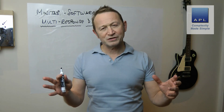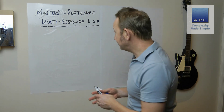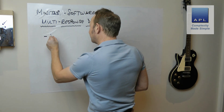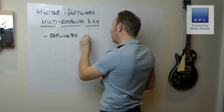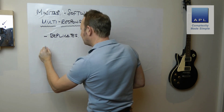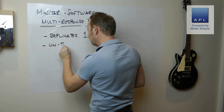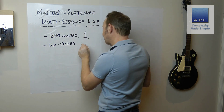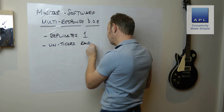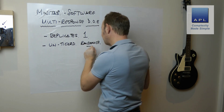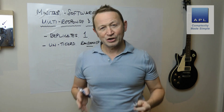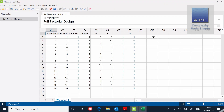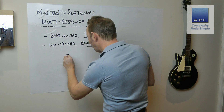Two important things about that setup: I left the number of replicates at one, and I unticked Randomize — I don't want the computer to randomize. What these two things do for me in the software: as you can see on screen, it gives me just one block of the DOE pattern.